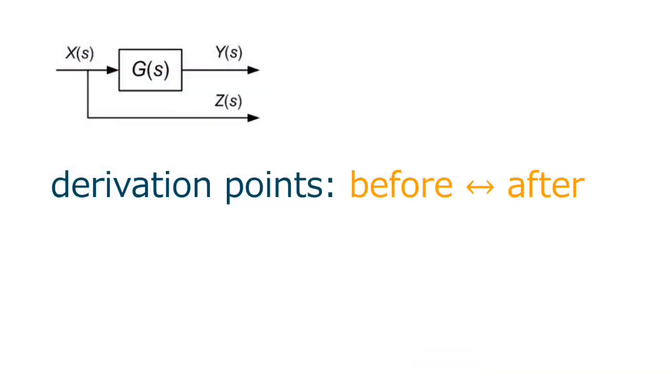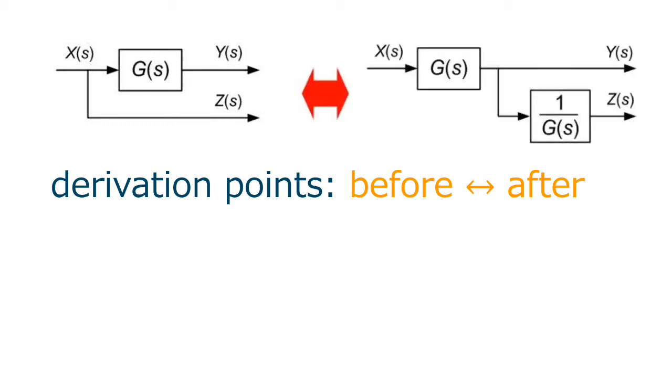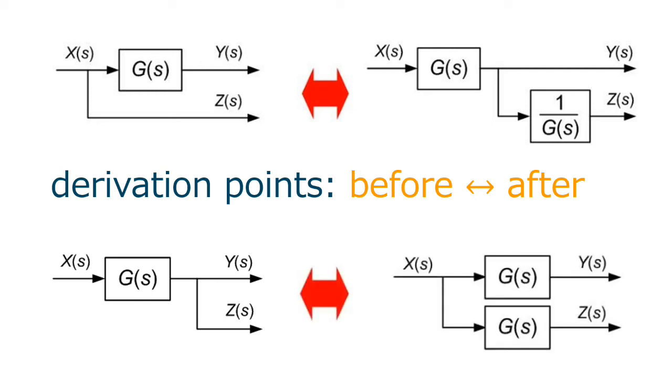Let us now see what happens if we have a derivation point to jump to the front of the block. This is the equivalent. And if we want a derivation point to jump back, this will be the equivalent. The overall idea is that the signals before and after the transformation remain unchanged. And this is easy to check.